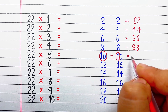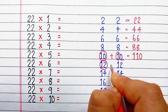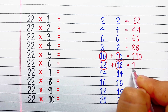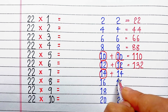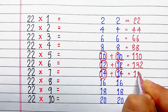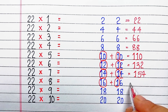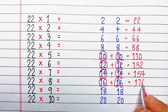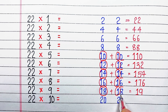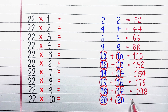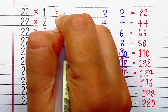Now we will add the left number to the tens digit of the right number, and then write the unit digit of the right number as it is. So here: 10 plus 1 is 11, write 0 as it is. Next, 12 plus 1 is 13, write 2. Then 14 plus 1 is 15, write 4. Then 16 plus 1 is 17, write 6. Next 18 plus 1 is 19, write 8. And then 20 plus 2 is 22, write 0 as it is. With this we have got the table of 22.